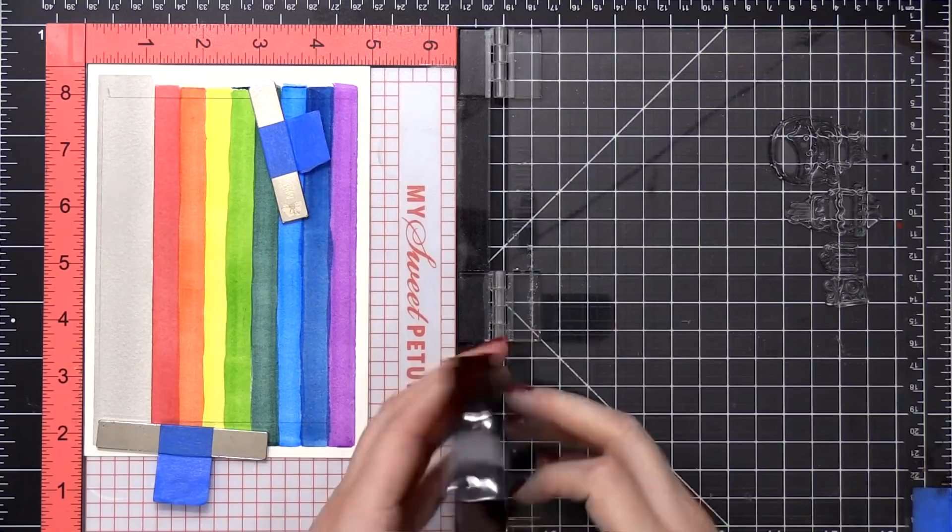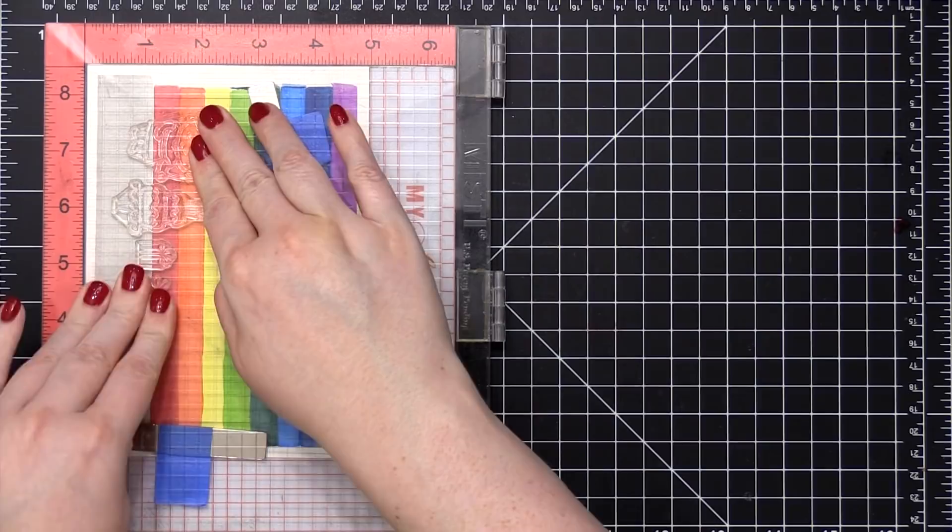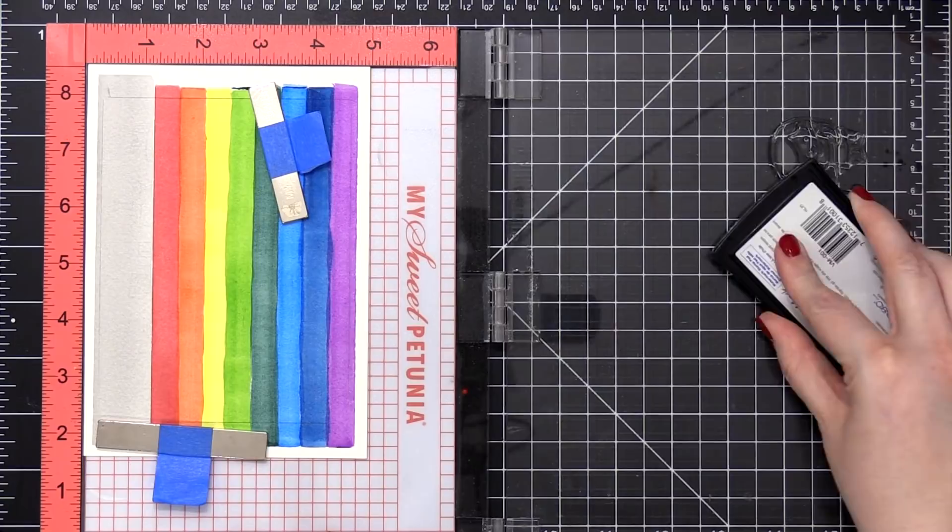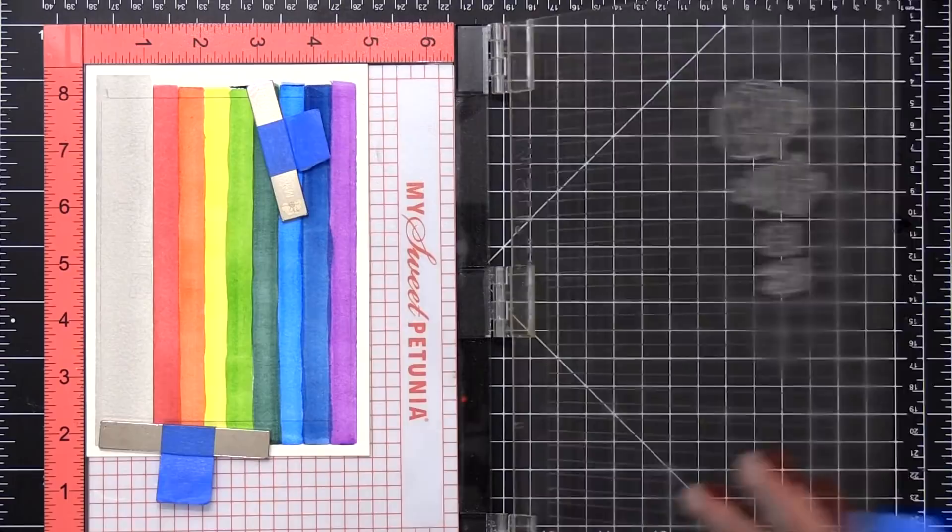I'm using some VersaMark ink for this. This is a really great ink for heat embossing, and I'm going to heat emboss these images in a white embossing powder. This is watercolor paper, so it has a little bit of texture, so I'm going to stamp these twice. This is just going to give a really solid line, and if there was any gaps because of the texture in the paper, it's going to give it a little bit more of a good chance of having it be a solid line once we're done.